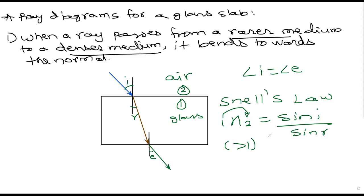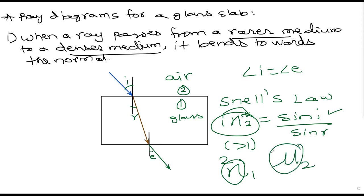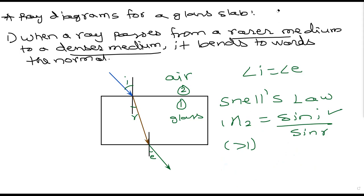Refractive index of denser medium with respect to rarer medium is always greater than one. When going from rarer to denser, sine i is greater than sine r, meaning angle i is greater than angle r. Various textbooks use different notations — eta or mu — follow your textbook. For NCERT and SSC, I'll tell you the correct notation.